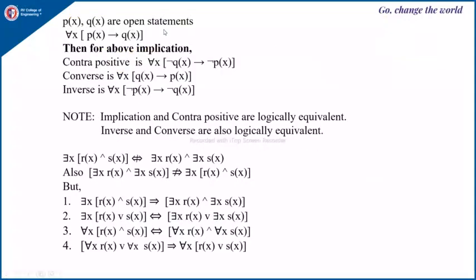Suppose p(x) and q(x) are open statements and we have 'for all x, p(x) implies q(x).' The contrapositive is: for all x, ¬q(x) implies ¬p(x). The converse is: for all x, q(x) implies p(x) — we just swap p and q. The inverse is: for all x, ¬p(x) implies ¬q(x). The implication and contrapositive are logically equivalent, and the inverse and converse are also logically equivalent.